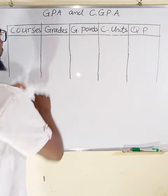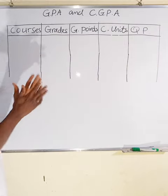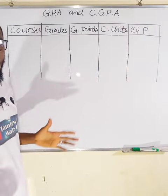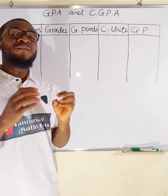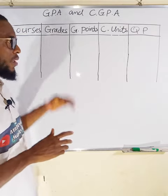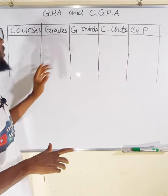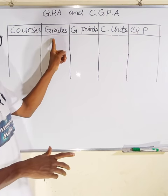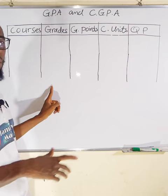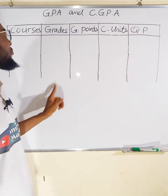First of all, you need to tabulate your data in this form. We have courses — all the courses you have registered within that semester, you are going to list them here. And write all the grades you obtained, whether it is A, B, C, or F.